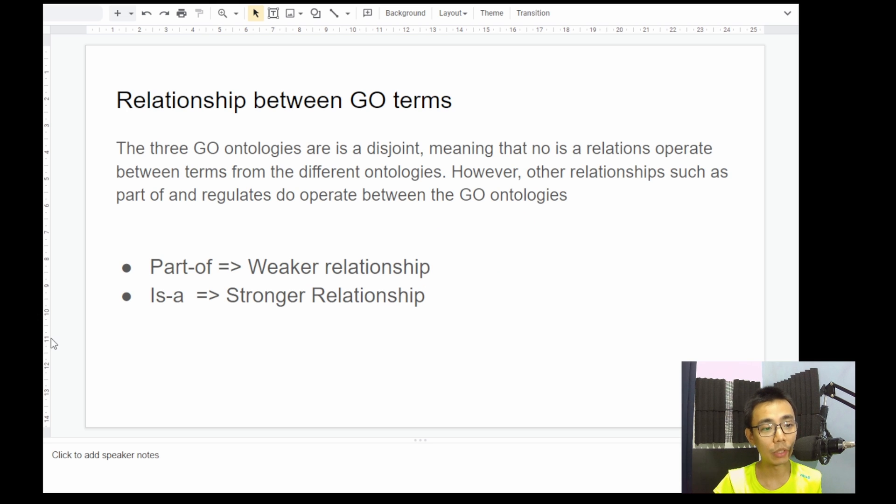And one thing that we need to know is that they are disjoint, meaning that the molecular function will never be linked with the cellular component and the biological process. So there are three distinct parts of GO ontology, and just to make sure that you understand why we need to run all three when we do such semantic similarity analysis.